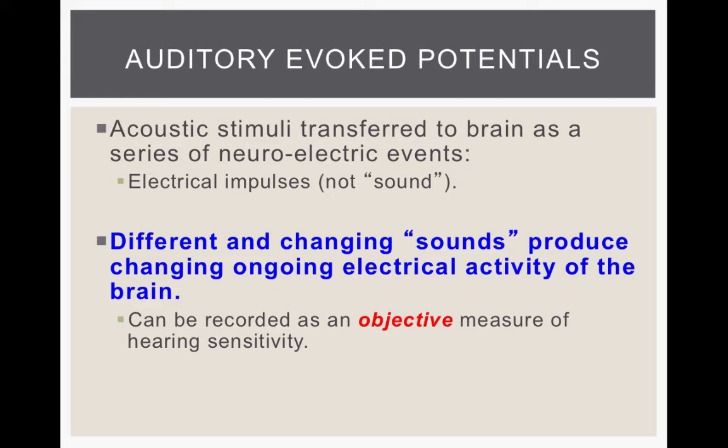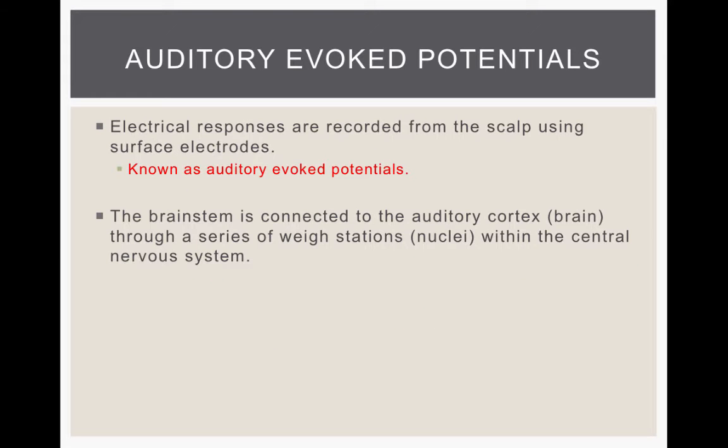Auditory evoked potentials are another form of objective test. Just like OAEs, the subject does not actively participate in this test. The way sounds are processed is they come in through the ear and the cochlea, then go up the auditory nerve. There are these series of way stations or neurons where sound is processed and shared all the way up to the auditory cortex. This electrical activity is what we measure on the brain as the auditory evoked potential — an objective measure of hearing sensitivity of the auditory nerve and the pathways up to the auditory cortex.